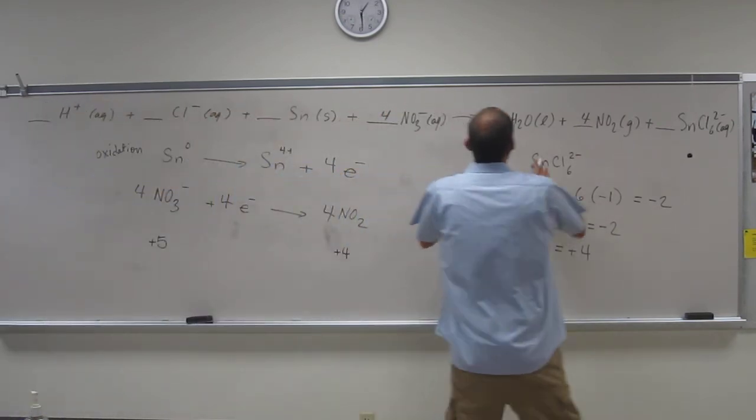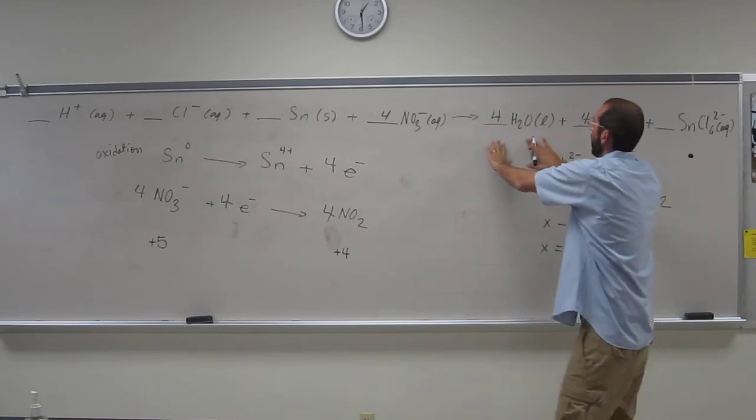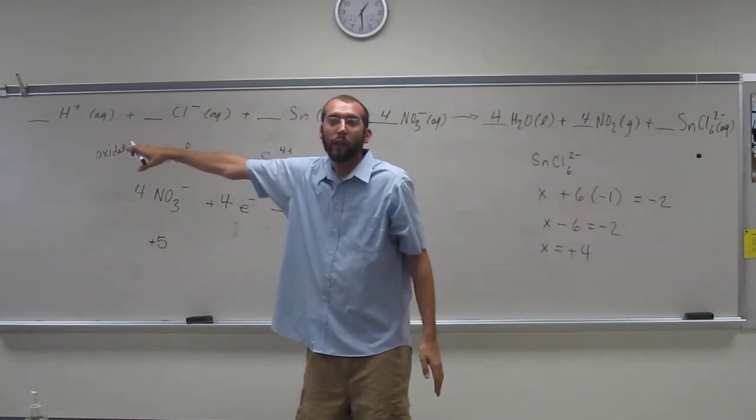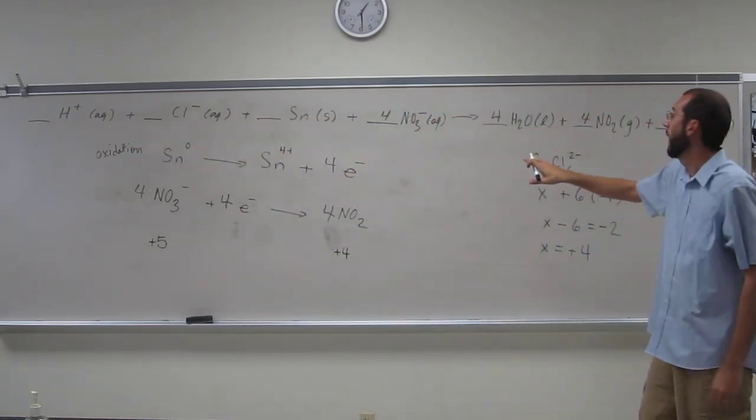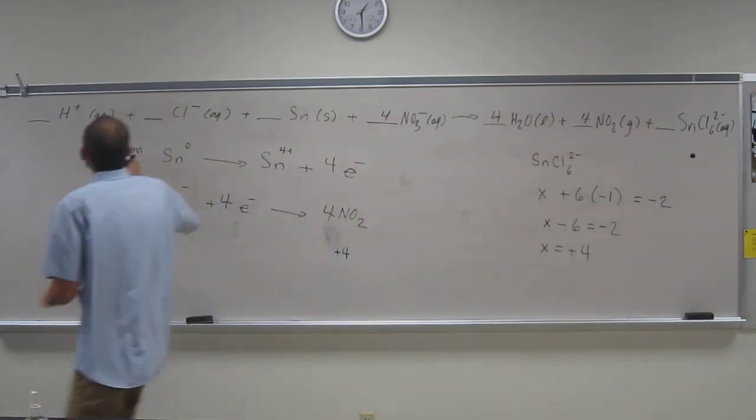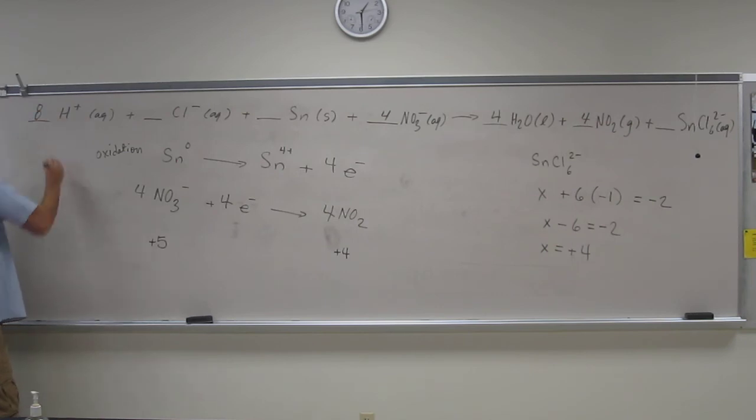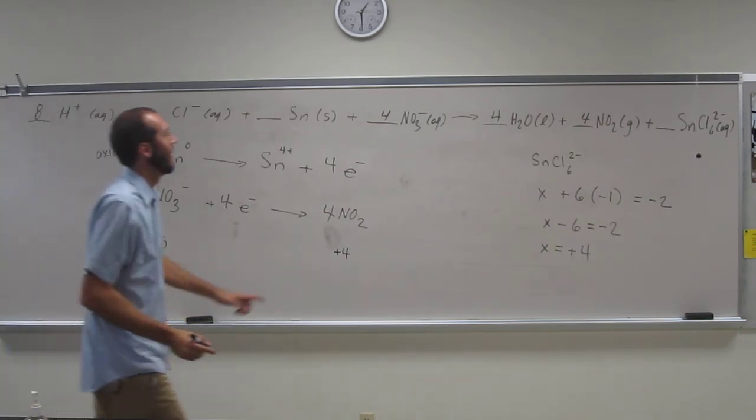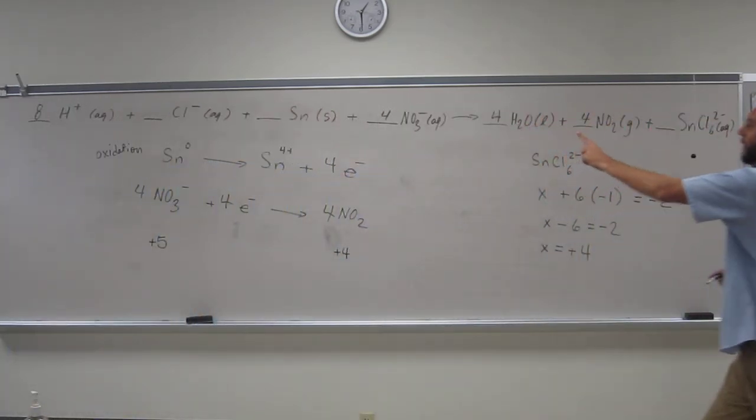So now we've got hydrogens over here but not as many over here, so we've got to balance that. Four times two is eight. So have we balanced yet? No. Chlorines still need to balance. Six.